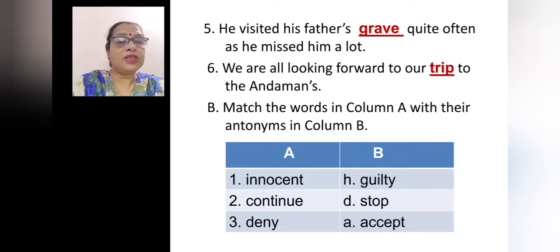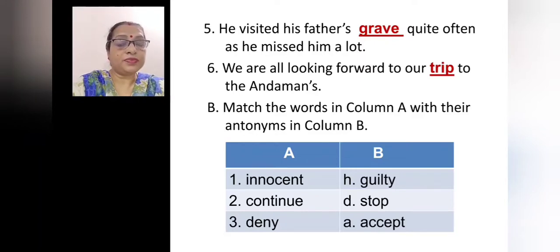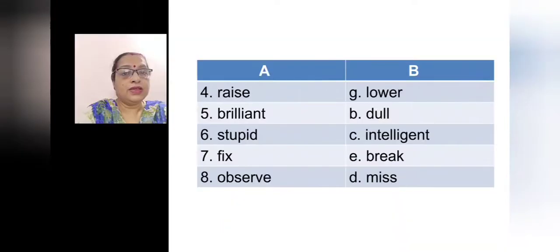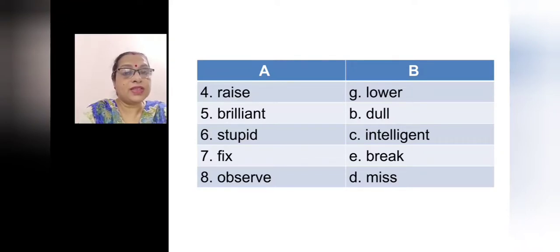Now match the words in column A with their antonyms in column B. The first word: innocent — antonym is guilty. Continue — stop. Deny — accept. Raise — lower. Brilliant — dull. Stupid — intelligent. Fix — break. Observe — miss.